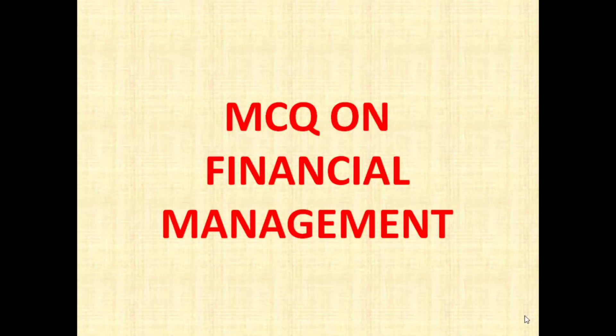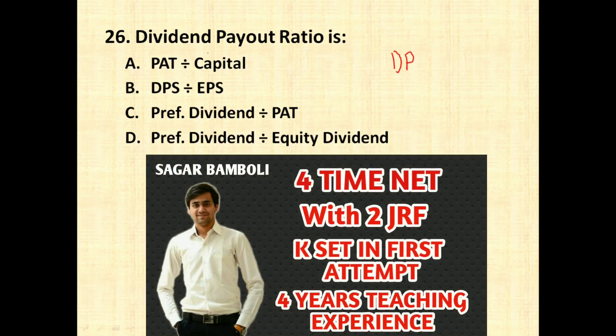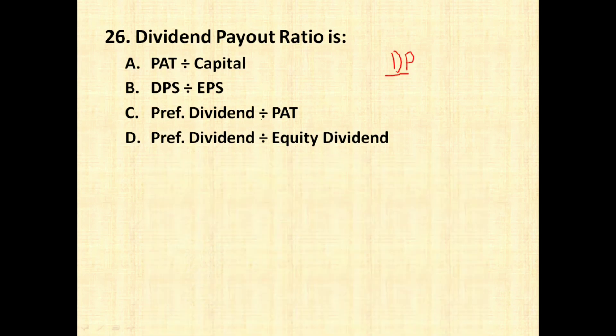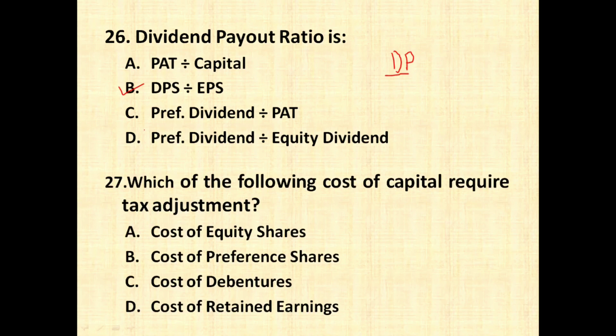The first question is: dividend payout ratio, which we also call the DP ratio. The options are: PAT divided by capital; DPS divided by EPS; preference dividend divided by PAT; or preference dividend divided by equity dividend. The right answer is DPS divided by EPS — that is dividend per share divided by earnings per share — which gives you the DP ratio.